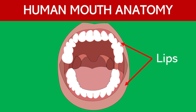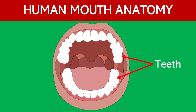Lips also contain sensory receptors that provide information about the texture and temperature of food. Teeth. Teeth are crucial for chewing, also known as mastication, which breaks down food into smaller pieces to facilitate digestion. They also play a role in speech articulation.